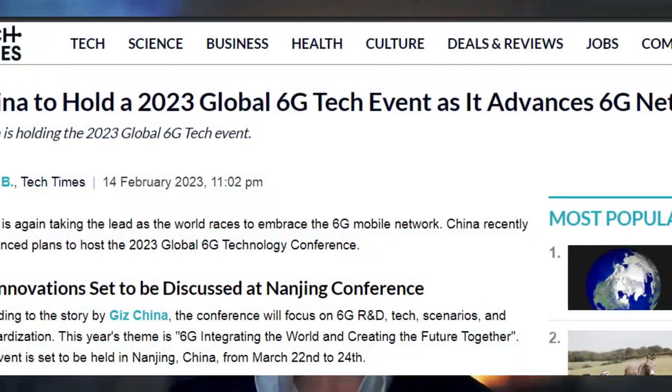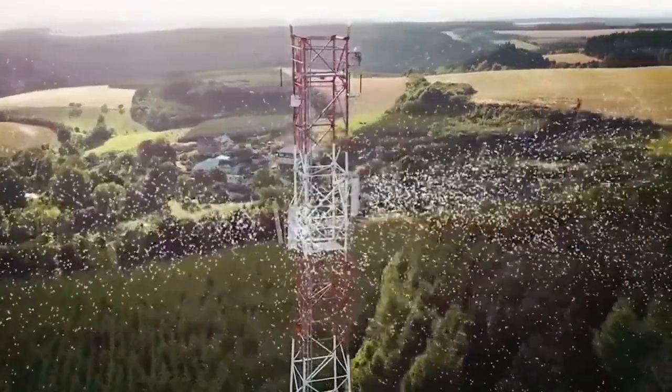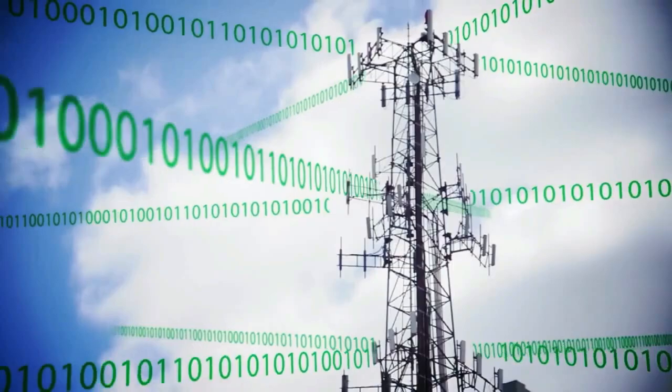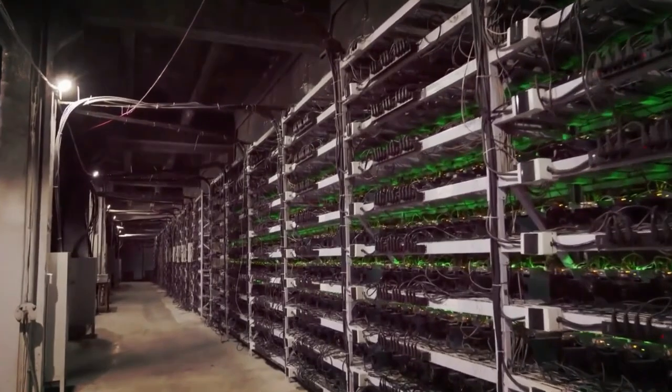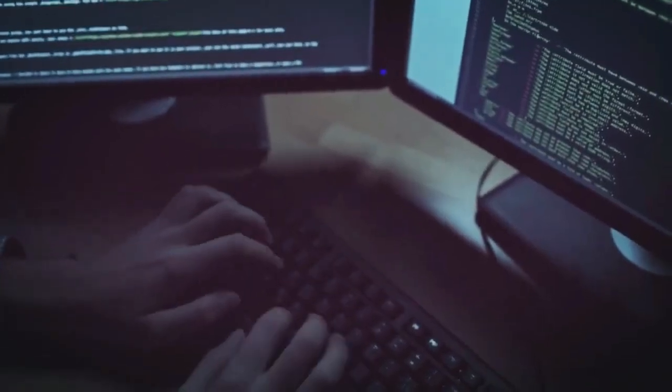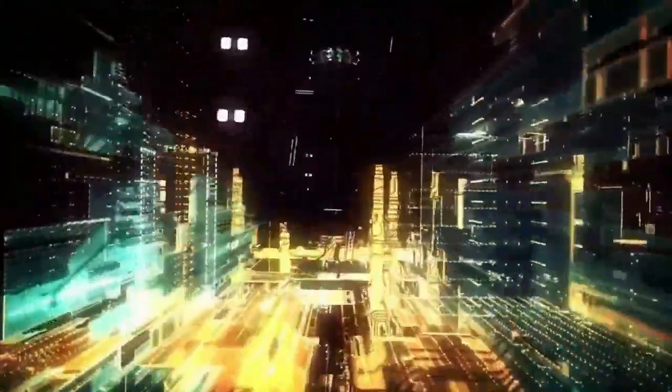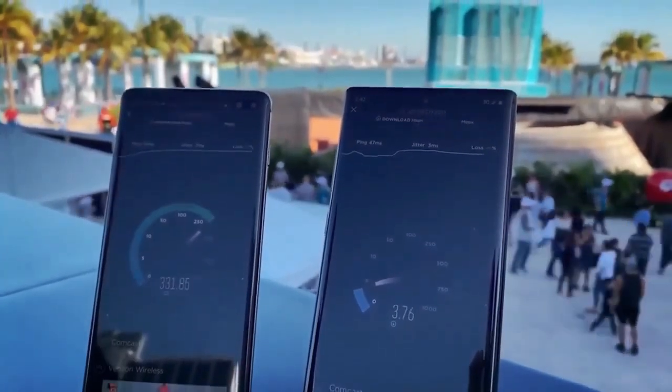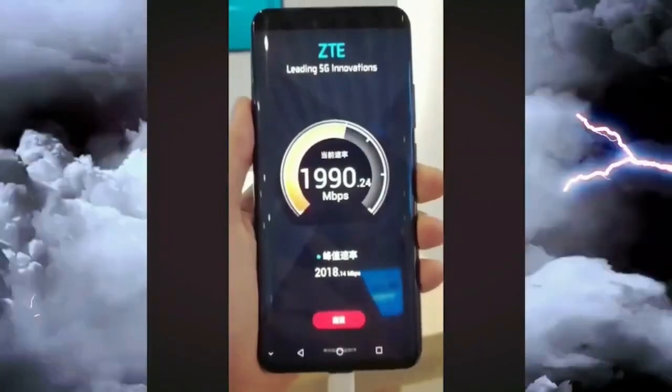Published by Tech Times, February 14, 2023. According to the story by Giz China, the conference will focus on 6G R&D tech scenarios and standardization. This year's theme is 6G integrating the world and creating the future together. The event is set to be held in Nanjing, China, from March 22nd to 24th. The event will convene leading industry experts worldwide and invite relevant global academic organizations, including Finland's 6G flagship program, Japan's 5G forum, and Singapore's future communications program. Participants will jointly organize forums to discuss the need to promote a steady 6G network globally. They will also delve into 6G application scenarios and standardization progress, network architecture and endogenous security, wireless transmission and spectrum sharing, space ground integration tech, and on-demand services. The hosts hope to set a global consensus on the 6G network and tech innovation at the 2023 Global 6G Technology Conference.